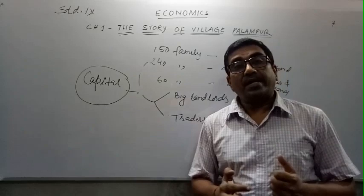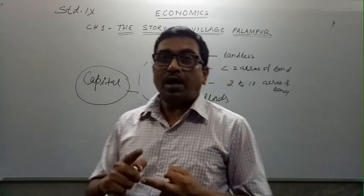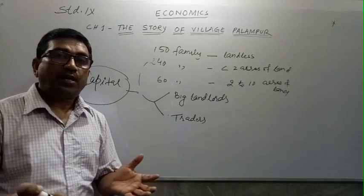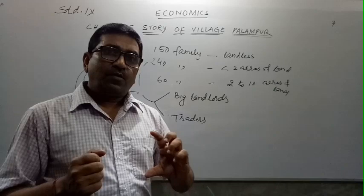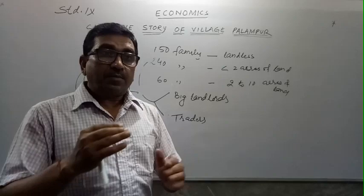So we have three factors of production covered: in the previous video we got land, and in this video we have got labor and capital. The fourth factor, entrepreneurs or human capital, are the persons who manage all these factors of production - running companies, industries, service sectors - they take the risk.